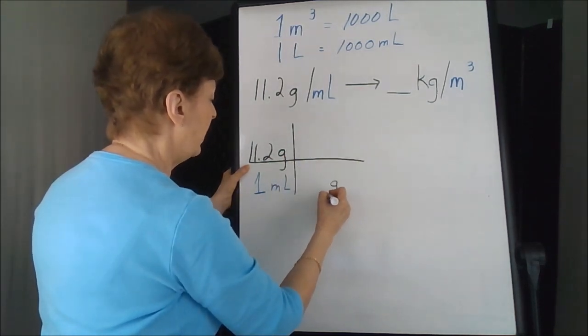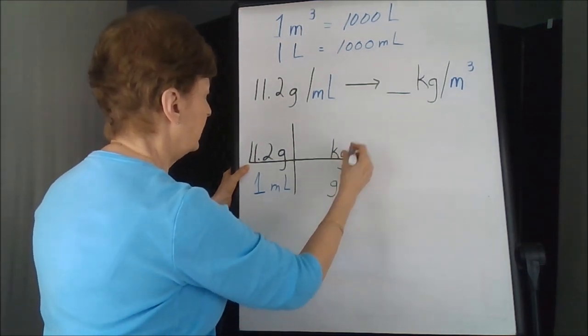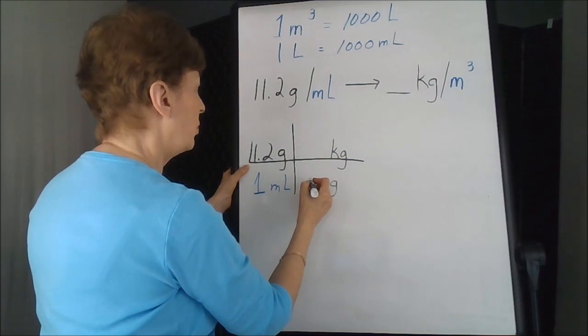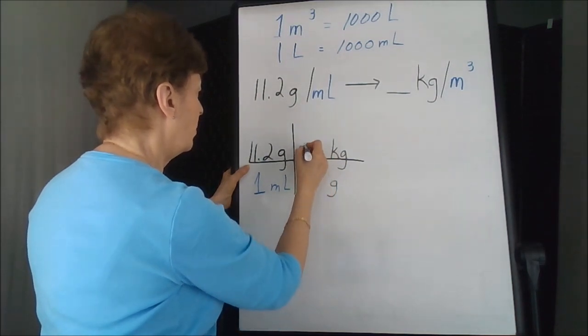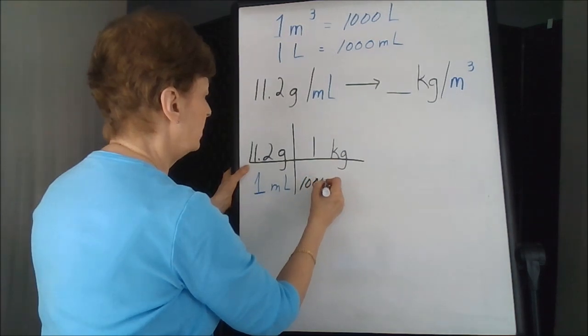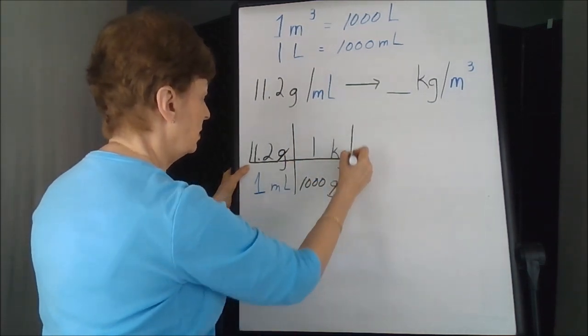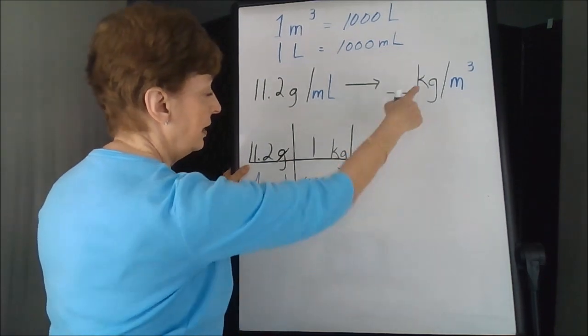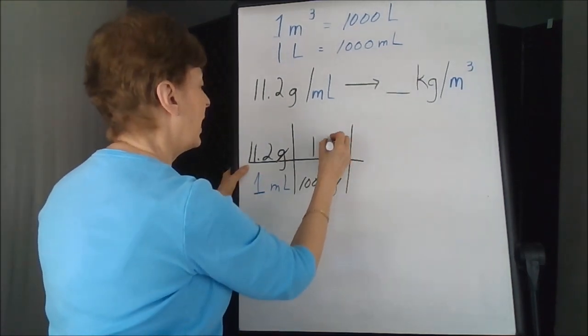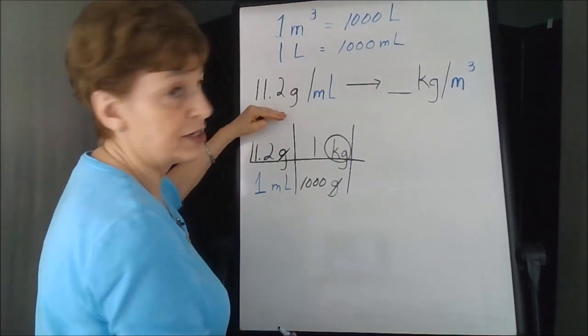So our grams have to come to the bottom. For one kilogram, the kilograms go on top. For one kilogram, we have 1,000 grams. Cross out the g's. Kilogram is my label. Well, I successfully converted that much of the problem.